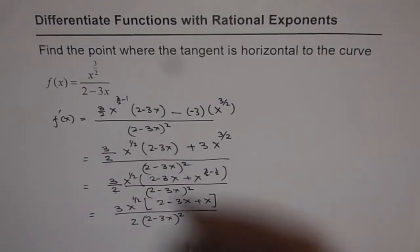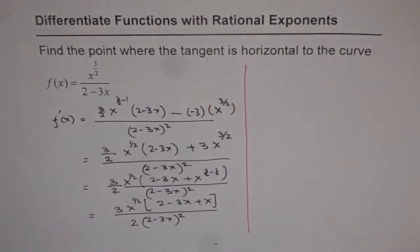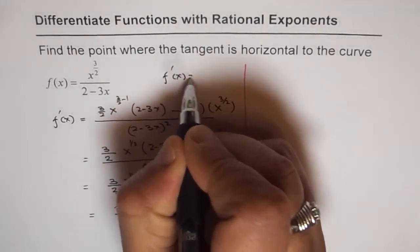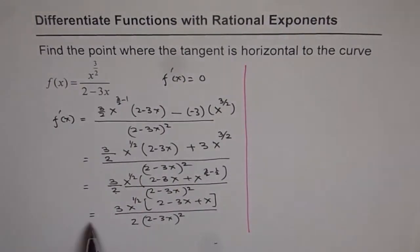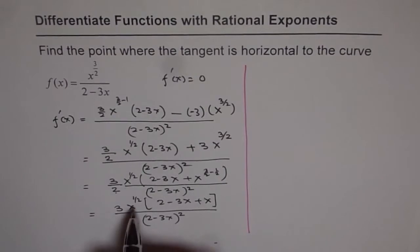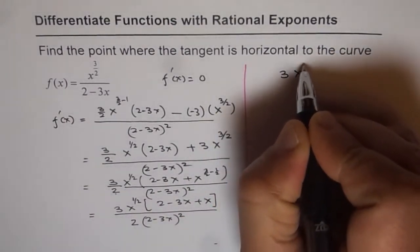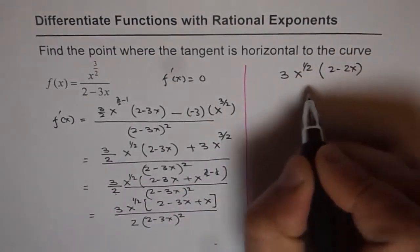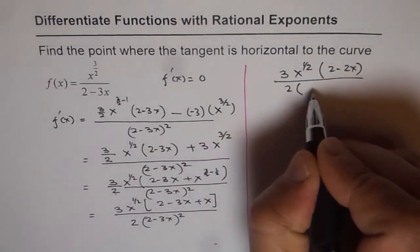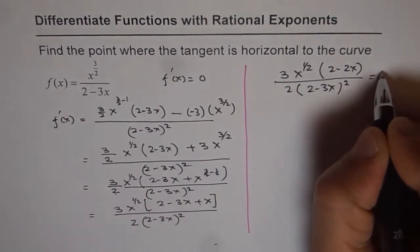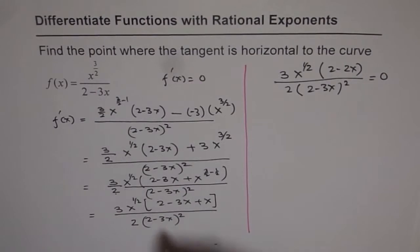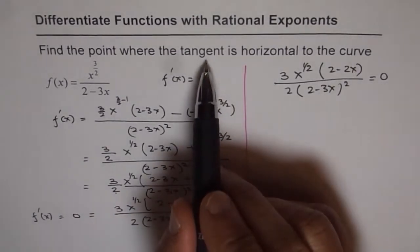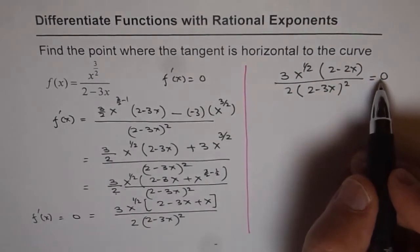Now we have the derivative and we can equate it to 0 to find where f prime of x equals 0. When the tangent is horizontal, f prime of x should equal 0. So we equate the numerator to 0: 3 times x to the power of half, times 2 minus 2x, divided by 2 times 2 minus 3x whole square equals 0. The numerator must equal 0.